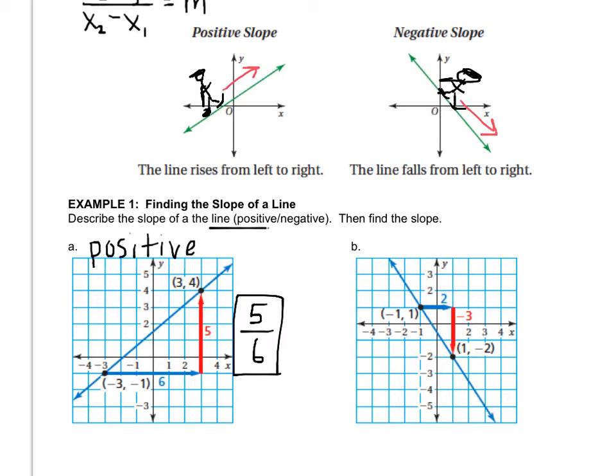No mixed numbers, no decimals. Always a fraction. Whether it's improper, that's okay. And so 5 over 6 is my slope.